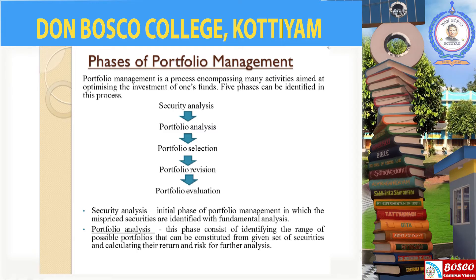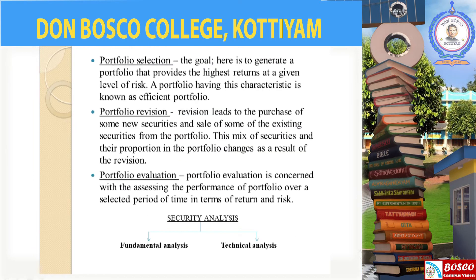The first phase is security analysis. The basic strategy in security investment is to buy underpriced securities and sell overpriced securities. In security analysis, we use two approaches — fundamental analysis and technical analysis — to identify mispriced securities. The second phase is portfolio analysis, where we analyze the complete risk and return characteristics of the securities in a portfolio. The third phase is portfolio selection, where we select a portfolio which gives high return with less risk — that is, an efficient portfolio.